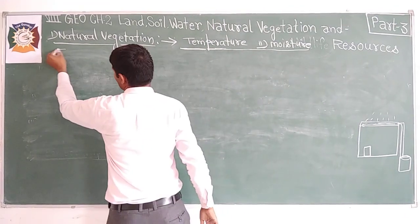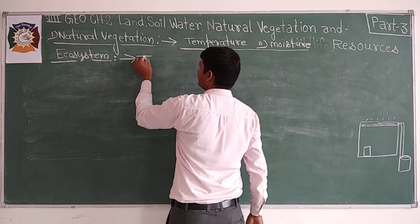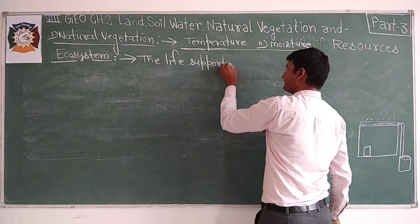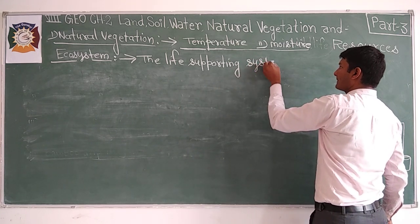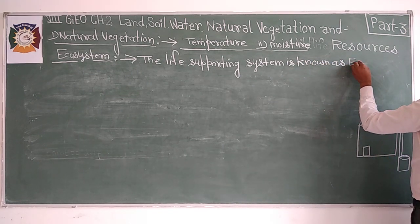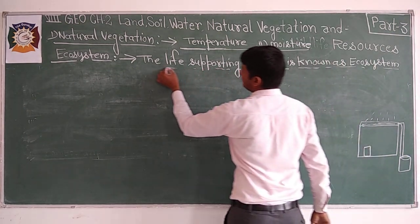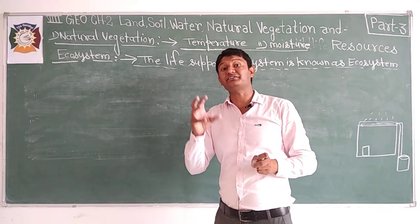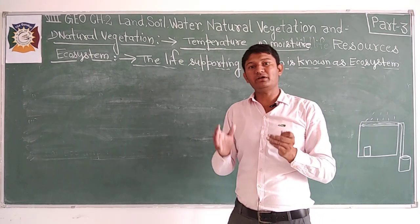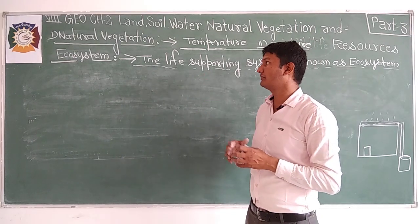Now let us talk about the ecosystem. A life-supporting system in which all living things are interrelated and interconnected to each other is known as an ecosystem. In this system, every living thing from very small to very large plays a very important role.